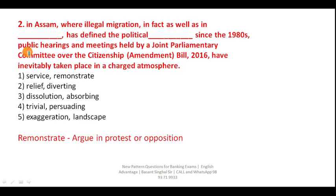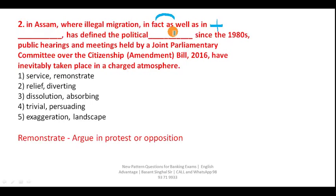Now let us see this question: 'in Assam where illegal migration in fact as well as in...' The keyword here is 'in fact as well as in.' You need another word equivalent to or in contrast with 'in fact.' When you say 'in fact' you are talking about reality, and 'in exaggeration' you are not talking about reality. So here your answer is option five — exaggeration.